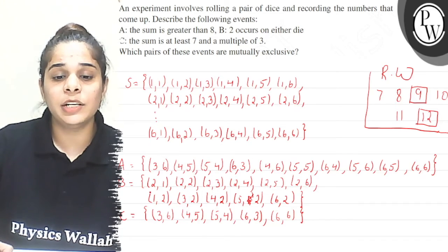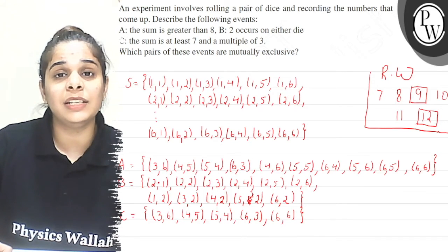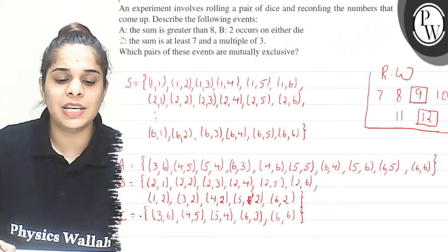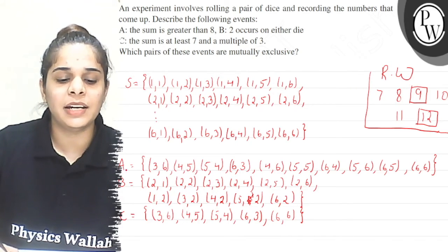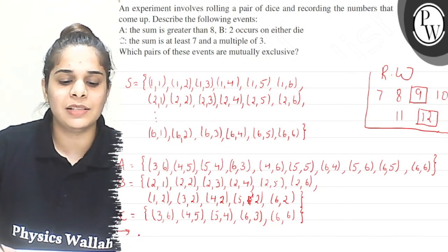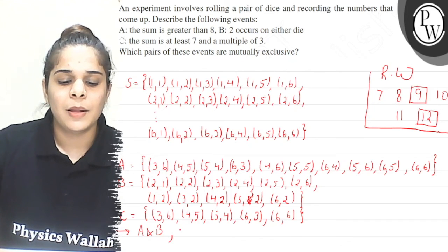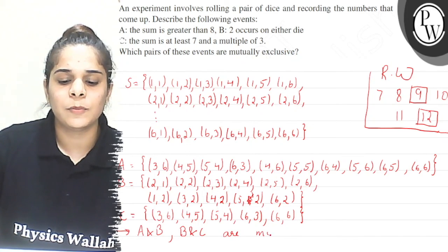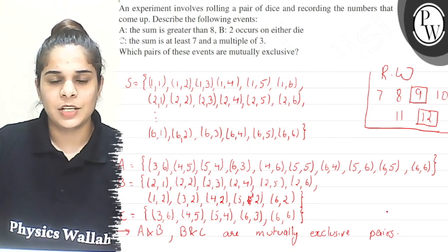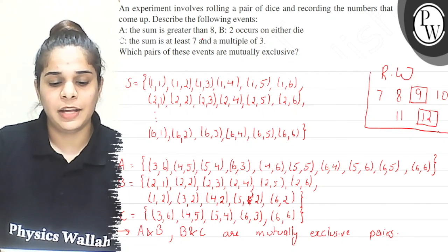Now what about B and C? B says 2 occurs on either die. Is there any element in C that has a 2? No. So B and C are mutually exclusive. My final answer: A and B are mutually exclusive, and B and C are mutually exclusive. So A and B as well as B and C are mutually exclusive pairs. I hope you understood.